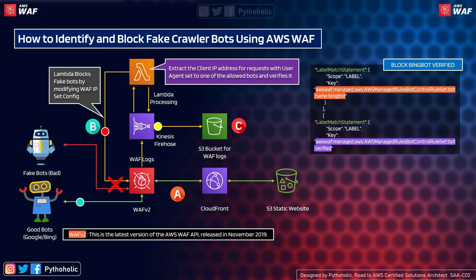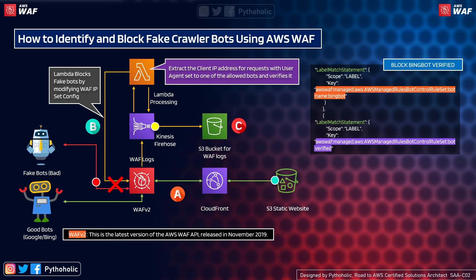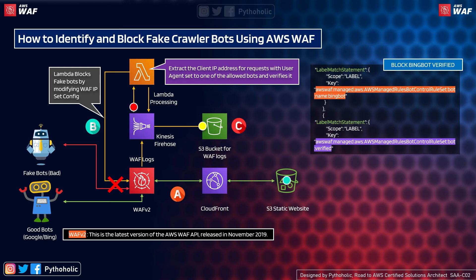When a request comes from a good bot like Google or Bing, WAF validates it and passes it forward to the CloudFront CDN, which then provides access to the S3 website content. If the request comes from a fake bot, AWS WAF detects its presence and blocks it accordingly.